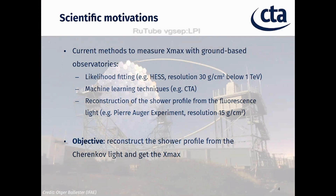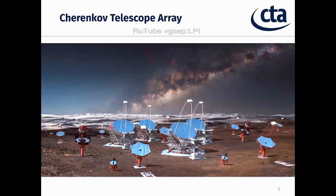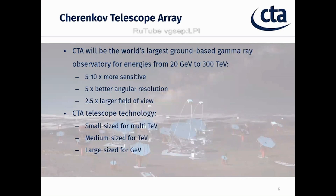Our goal is to propose a method to reconstruct the shower profile using Cherenkov light and obtain the Xmax resolution. This is an artistic design of the Cherenkov Telescope Array — you can see different kinds of telescopes of different sizes that are going to be located in Spain (La Palma) and in Chile (Paranal) to cover both hemispheres. CTA will be one of the largest ground-based gamma-ray observatories, for energies from 20 GeV to 300 TeV, with better sensitivity, better angular resolution, and a larger field of view, using three telescope sizes to cover the whole energy range.